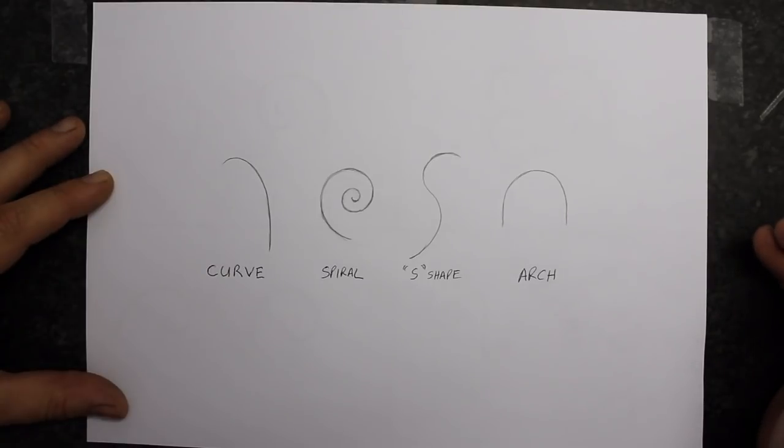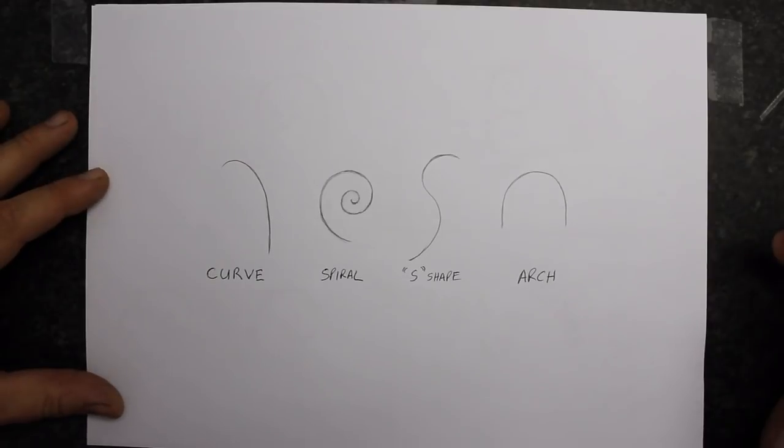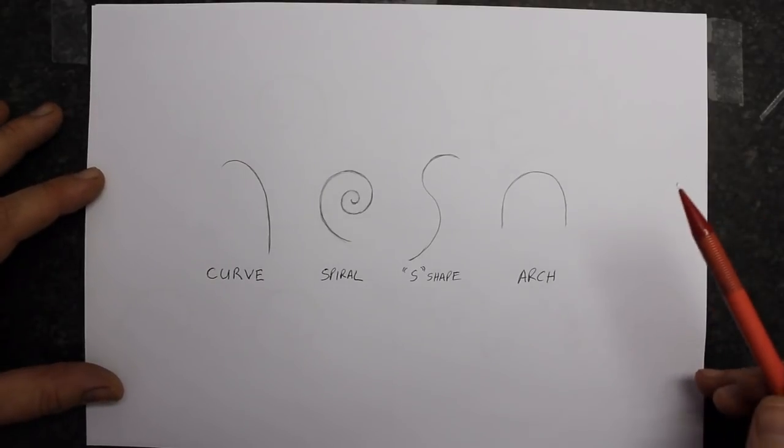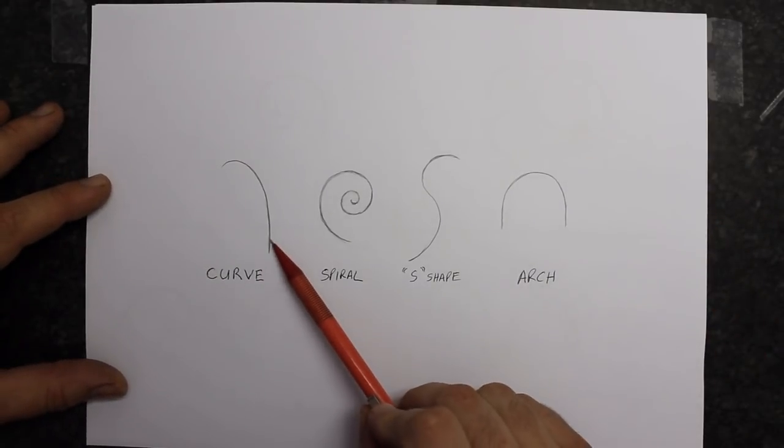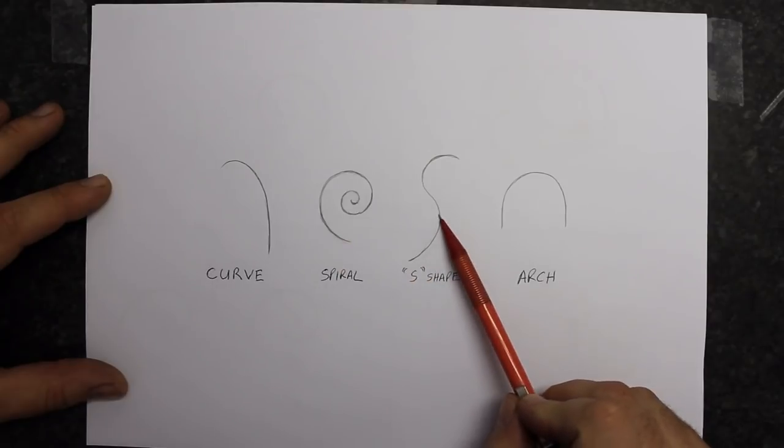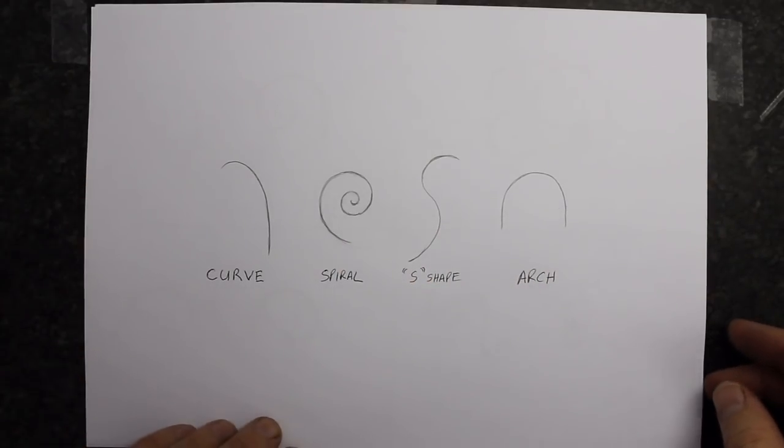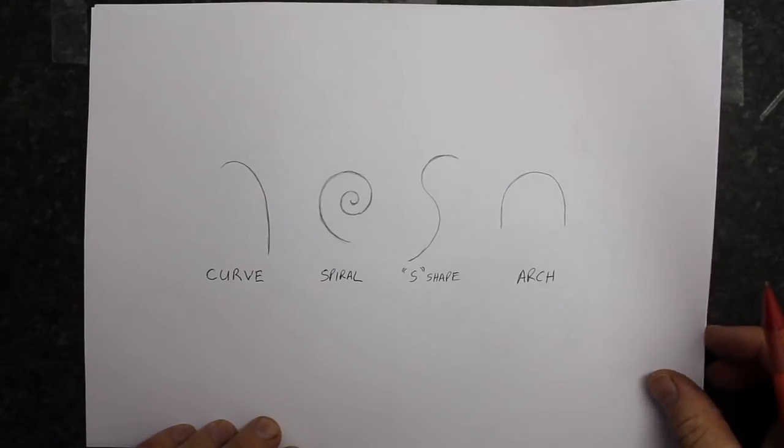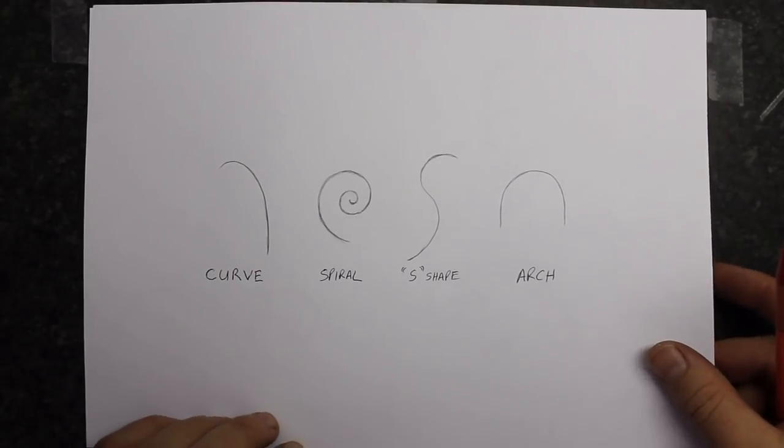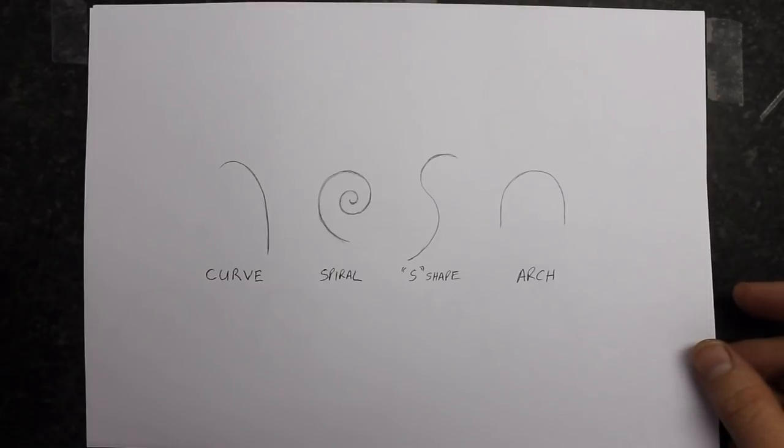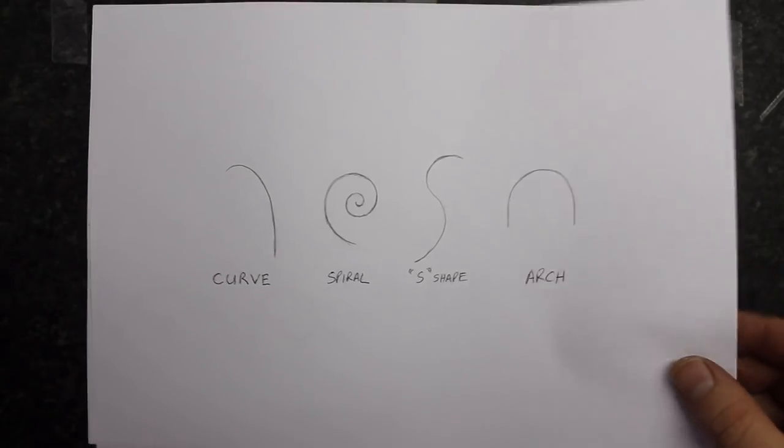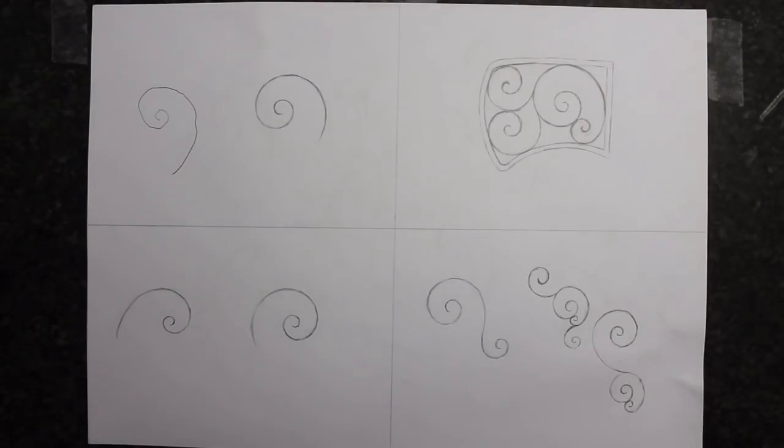Take any scroll design that you see anywhere, break them up in the components and when you look out for them you will see these basic four shapes. This is the basis on which all scrolls are built. This will make it easier for you to design once you know what to look out for.